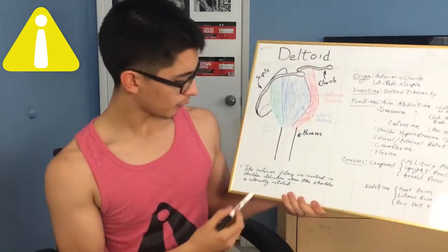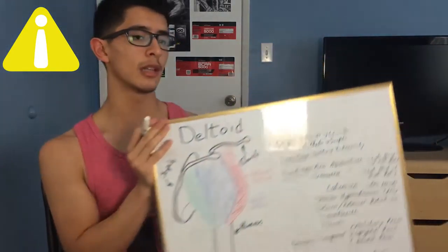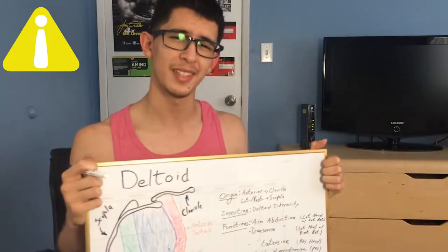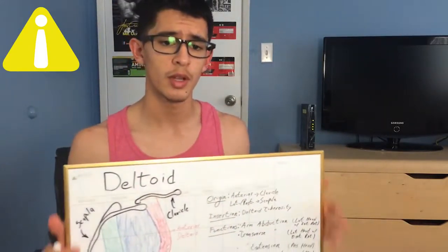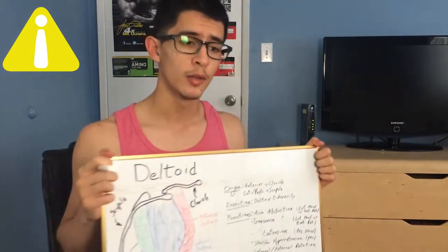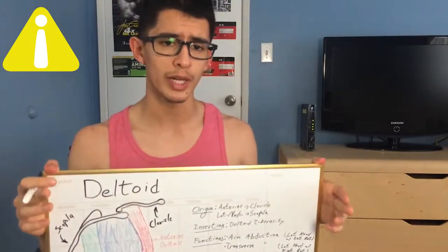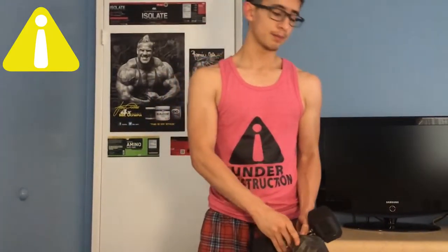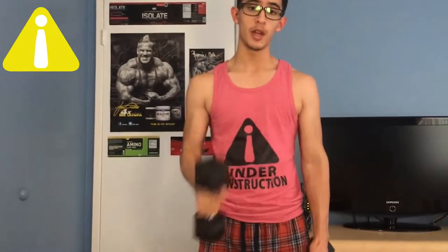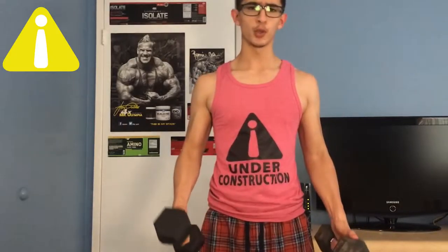Here I wrote a helpful quote: the anterior fibers are involved in shoulder abduction when the shoulder is externally rotated. This is something I learned through my own testing and trying different shoulder movements to get better isolation of the delts. Shoulders are one of my weak points, so I did a lot of research into which exercises are good for the shoulder and which ones put too much stress on the joint.